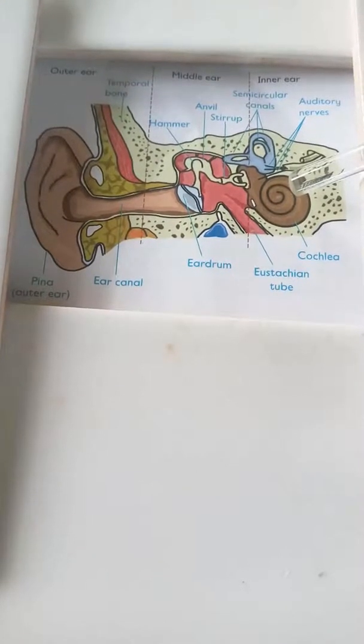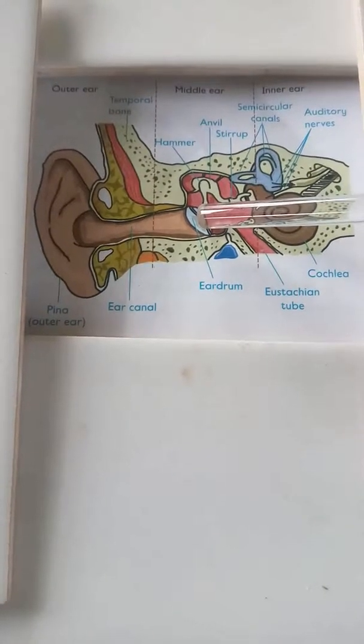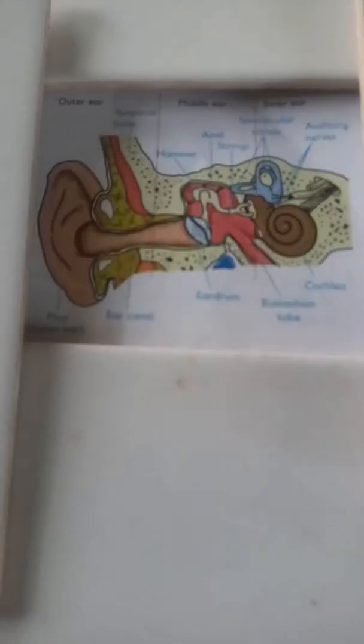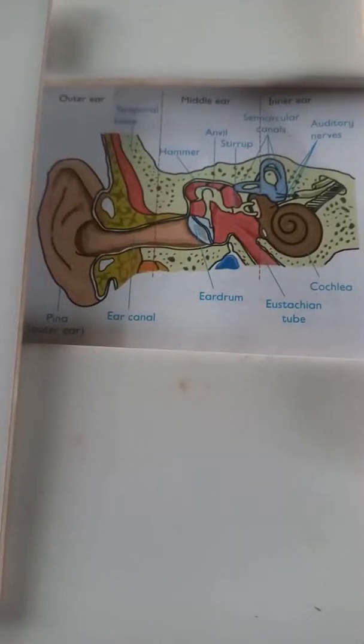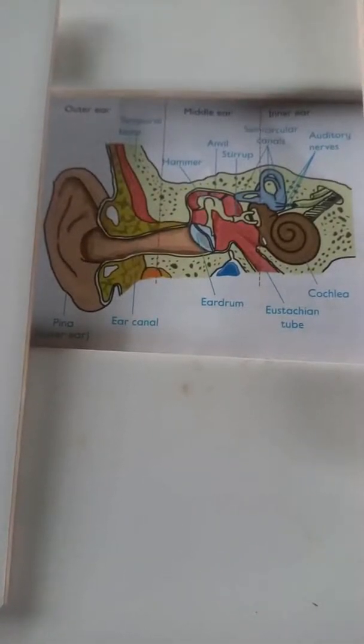The outer ear consists of the pinna and ear canal. The pinna collects sound from outside, and the ear canal is used to channel sound to the eardrum. Sounds are in the form of a pressure wave with an alternating pattern of high and low pressure regions.